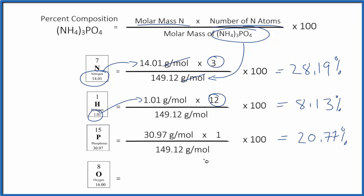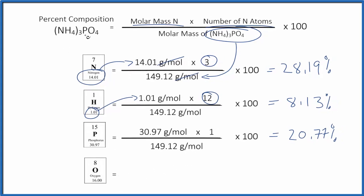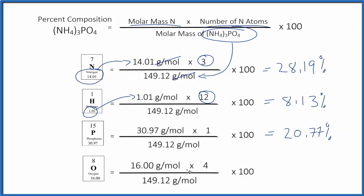Pause and figure out the percent composition by mass for the oxygen here in (NH4)3PO4. So we have our 16.00 grams per mole. We multiply that by 4, since we have 4 oxygen atoms. We multiply, then we divide by the molar mass for ammonium phosphate. Get that number, multiply by 100, so we'll get our percent, which is 42.92 percent. That's the percent composition by mass of the oxygen in ammonium phosphate.